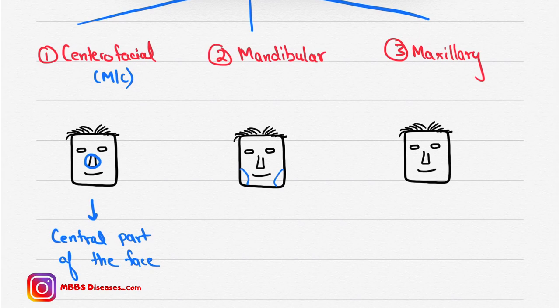Now what happens in the mandibular type? This area or this area is involved. If this area is involved, then it is mandibular type. This is the outer lower area of the face.